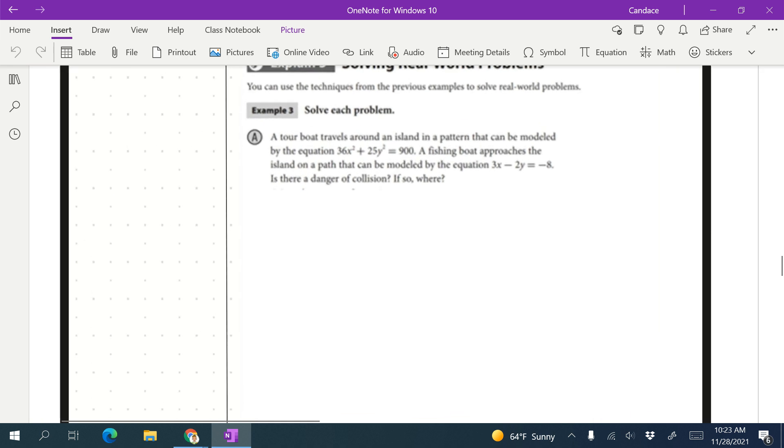So we've got a boat tour that travels around an island in a pattern that can be modeled by the equation 36x squared plus 25y squared equals 900. A fishing boat approaches the island in a path that can be modeled by the equation 3x minus 2y equals negative 8. Is there a danger of collision? If so, where?